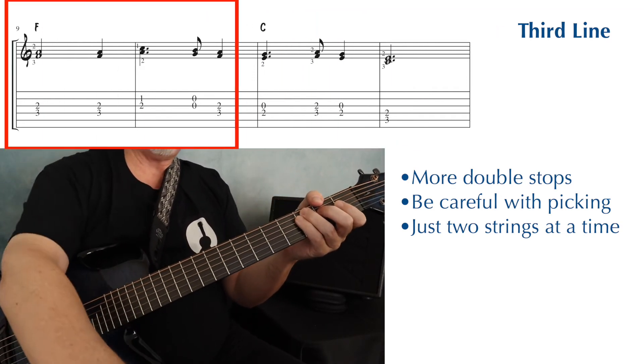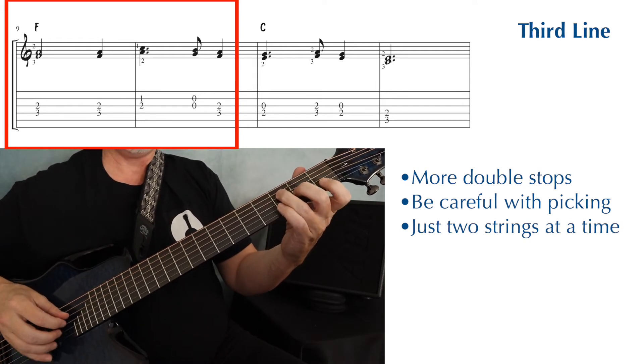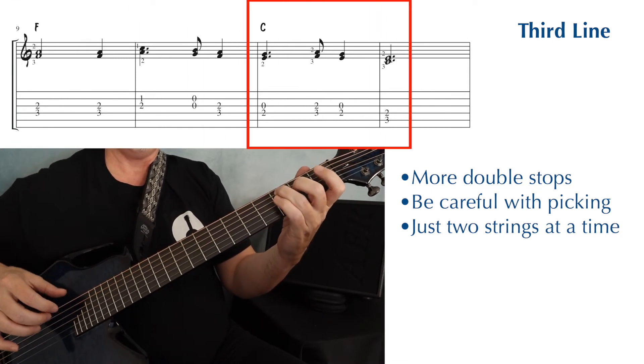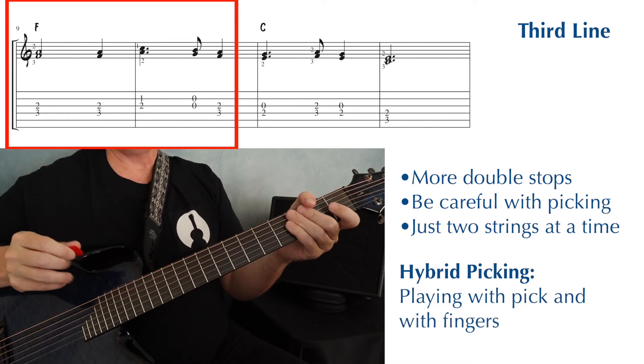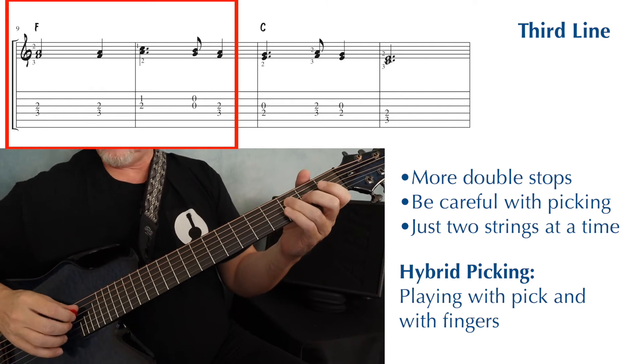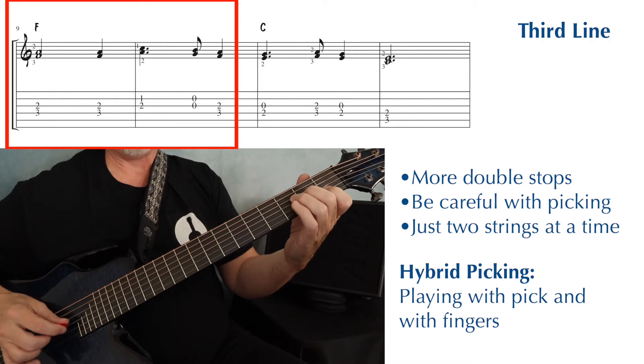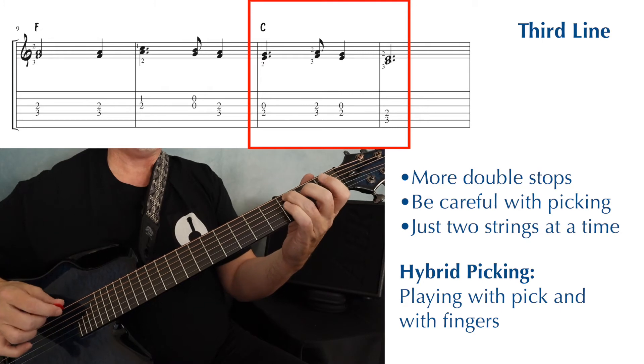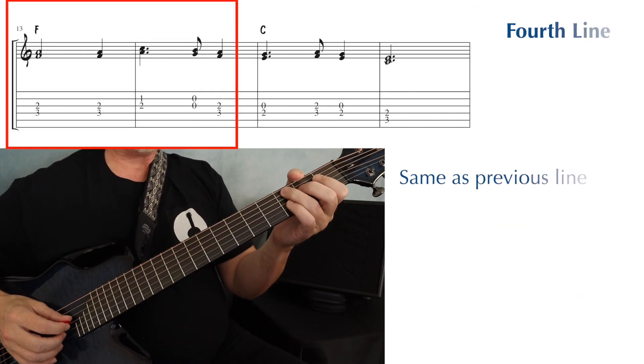Now if you're playing finger style, that's pretty easy because you just use fingers to play only those strings. If you're a pick player, you could also try what's called hybrid picking. Hybrid picking is when you use your pick and your fingers. So you can use your pick to play one note and your fingers to play another note. The next four measures are the exact same.